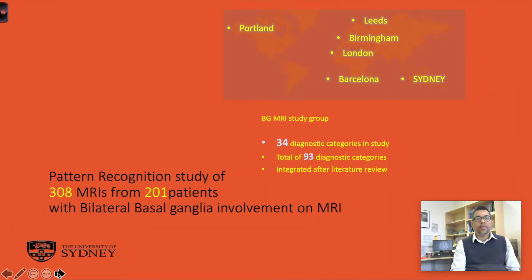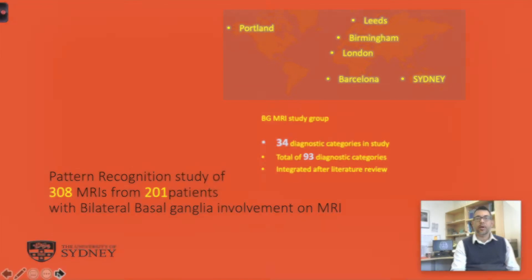This was a collaborative study from various colleagues internationally, looking at a cohort of 201 children from 34 different diagnostic categories, further supplemented by a literature review to make up a total of 93 different diagnostic categories that can lead to children presenting with bilateral basal ganglia changes on MRI.